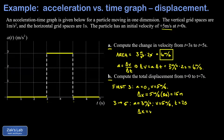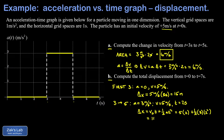We use the constant acceleration kinematics formula: change in position equals v-naught times t plus one-half times a times t squared. Plugging in v-naught of five meters per second, time of two seconds, and acceleration of three meters per second squared: five times two plus one-half times three times two squared gives a displacement of 16 meters during the second part of the process.